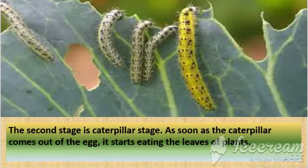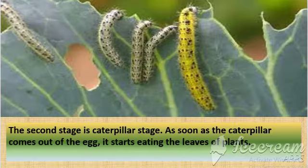The second stage is the caterpillar stage. As soon as the caterpillar comes out of the egg, it starts eating the leaves of plants. A caterpillar continues to grow for about two weeks and becomes as long as our index finger.